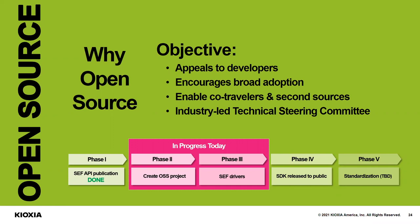Where do we sit today in terms of delivery? Phase one is already out there — the API has been published and is available on GitHub. Today it's on the Kioxia GitHub slash Kioxia America site. We will be transferring that to the project when it opens later this year. In progress today is the work to actually create the project: working with the Linux Foundation, getting the legal aspects taken care of, setting up the project, and doing the development of the device drivers and the SDK itself. Once through phase two and phase three, we will release the project and make the SDK as well as the API available to the public on that vendor-neutral site. And sometime in the future, we can look at standards committees to see if they're applicable to the direction that Software Enabled Flash is going.